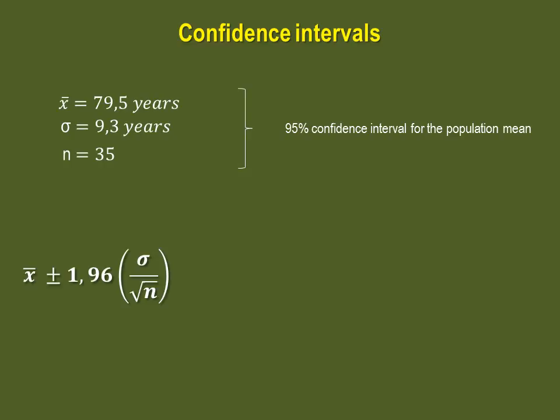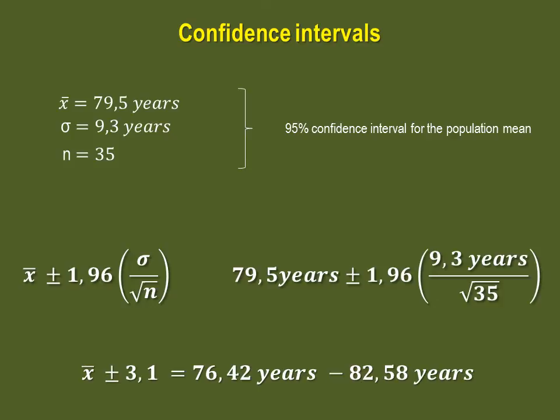Now we know that we can use this equation which states that our population mean will be within 1.96 standard errors of our sample mean. So all we do is plug in the appropriate numbers and do the calculation. And our final interval is that the population mean of death will be between 76.42 years and 82.58 years old.